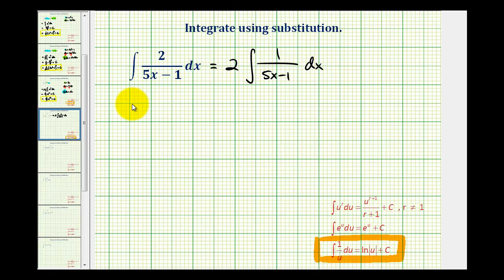So if we let u equal 5x minus 1, then du would be equal to 5dx.